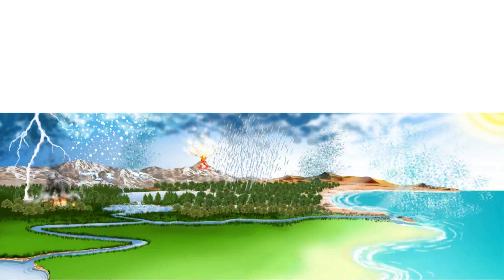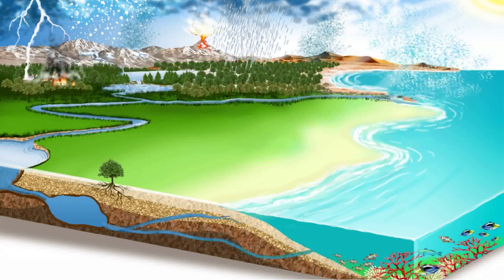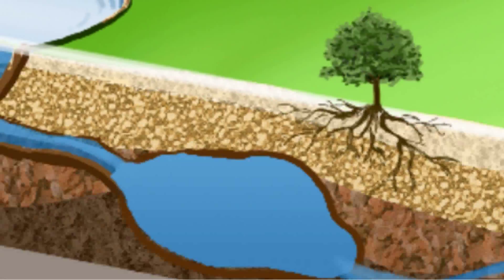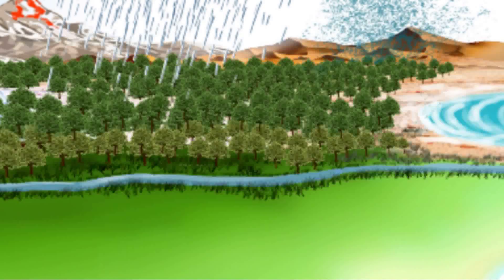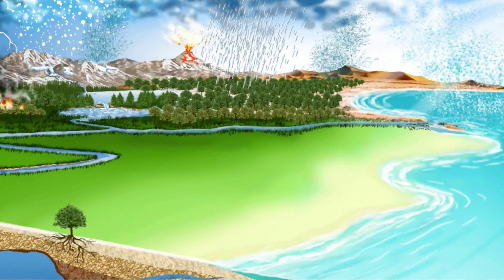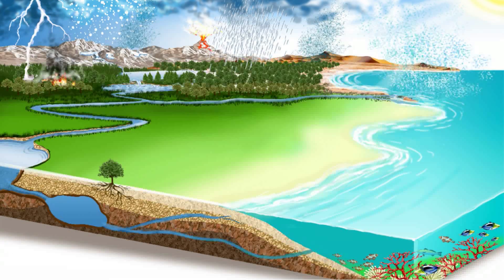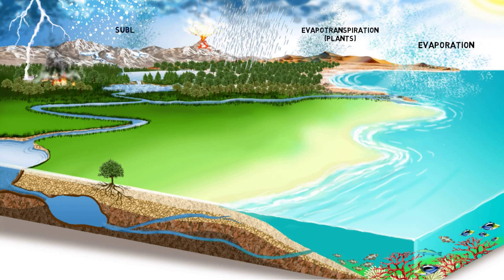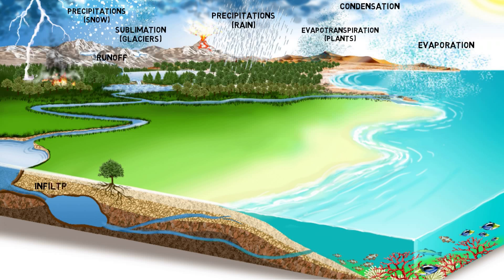Water covers 70 percent of the Earth's surface and is vital for all known forms of life. While it can take different forms — ice, fresh water, underground water, saline water, and atmospheric water — depending on a wide range of climate variables, its total amount always remains constant. Water on Earth gets recycled as it moves through processes of evaporation, evapotranspiration, and sublimation, condensation, precipitation, runoff, and infiltration.